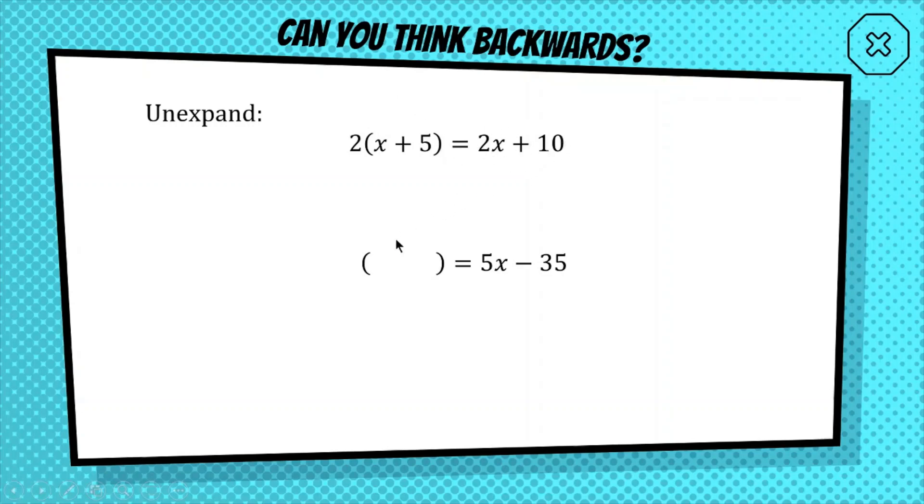A little bit harder now. For the second one, the answer is 5x minus 35. I want you to think of what the question could be, such that when you expand it, you get 5x minus 35. So the way we're going to approach this is we're going to look at 5x, and we're going to look at 35, and we're going to see what is something that could be multiplying to both of these.